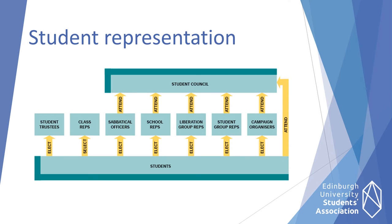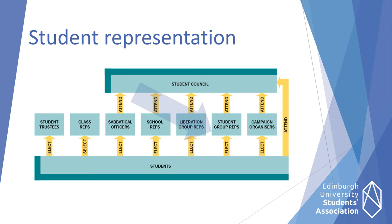In addition to the sabbatical officers and school reps, who you may be working with closely, the Students' Association has four liberation groups and four section groups. The liberation groups represent traditionally marginalised groups: Women, LGBT+, Black and Minority Ethnic, and Disability and Mental Wellbeing. The section groups represent different sections of the student body: mature and part-time students, postgraduate students, international students, and student parents and carers. Each liberation and section group has a convener who is elected by students who identify into that group. Both sets of groups run events and campaigns throughout the academic year.